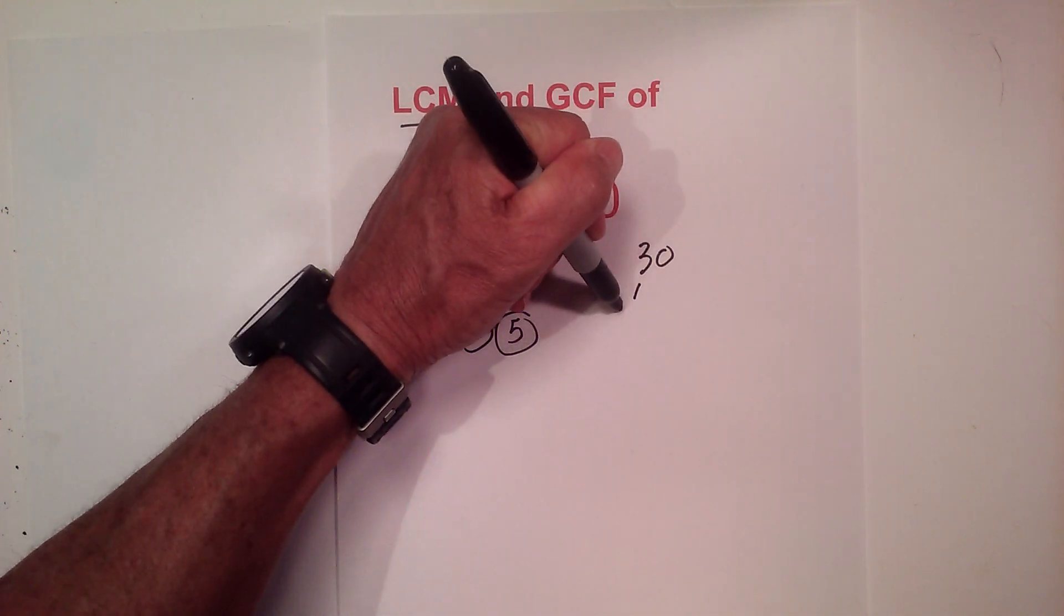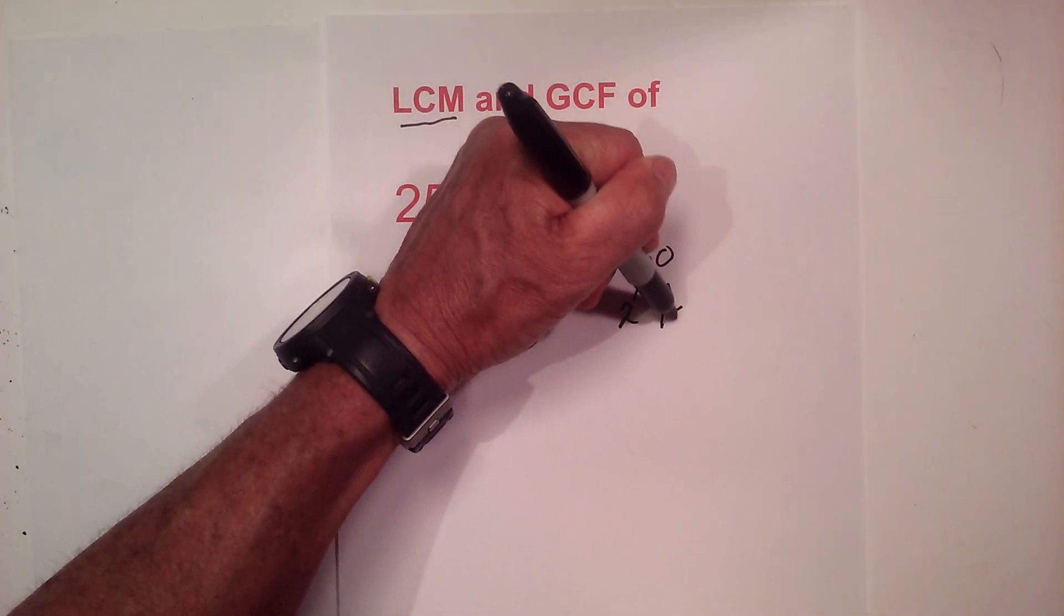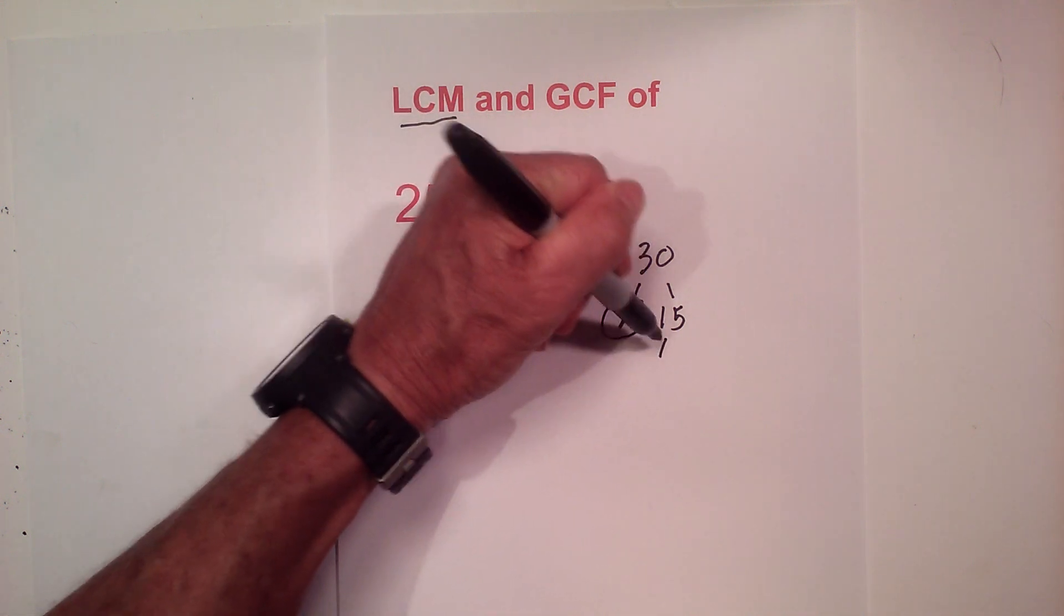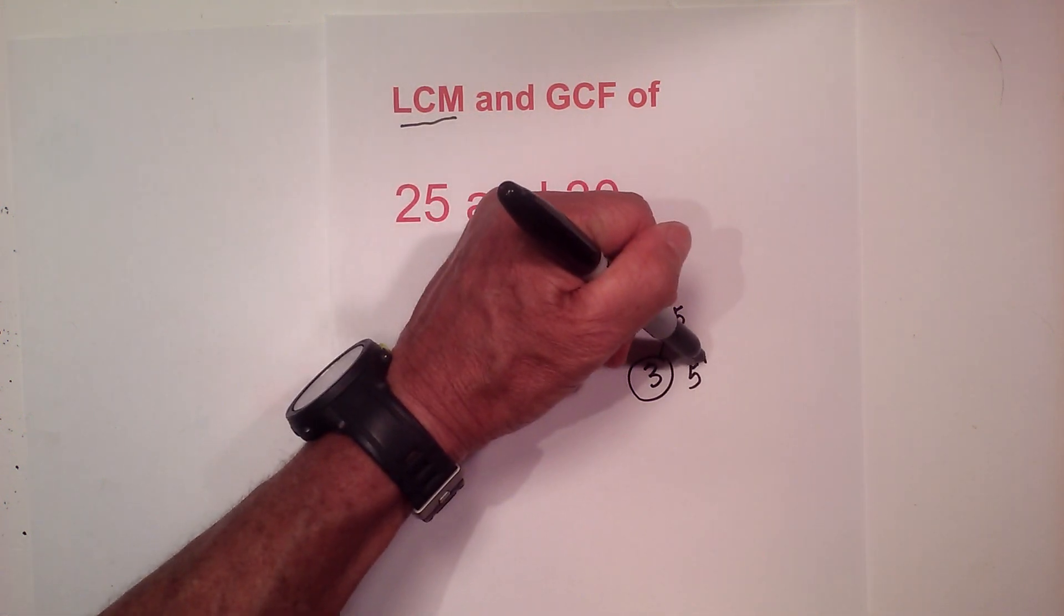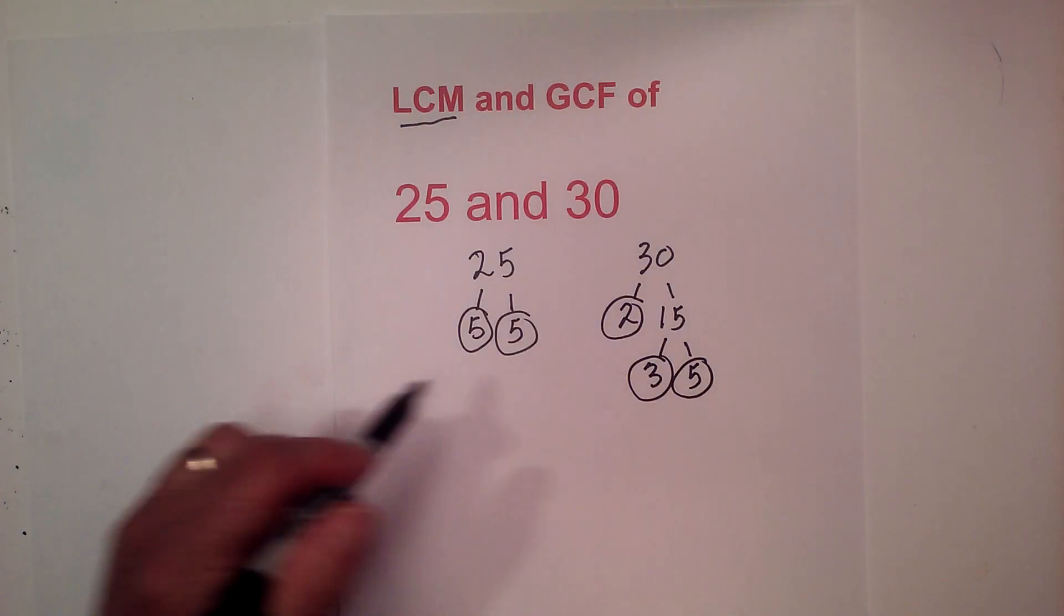Next let's look at 30. I can begin with 2 times 15. Circle the 2 because it is prime, and now 3 times 5 equals 15. They're both prime and I'm down to prime numbers.